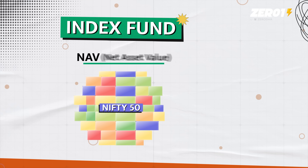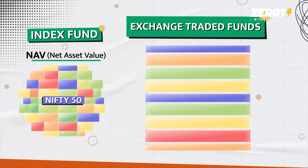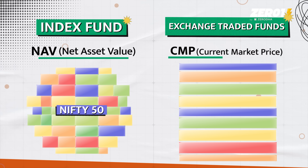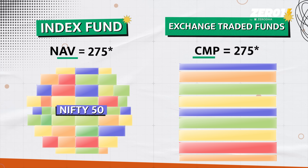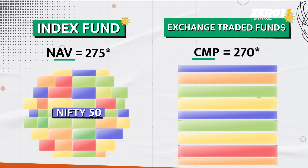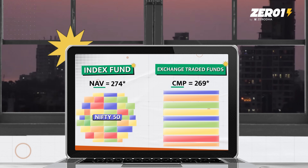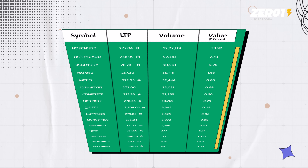Now imagine the same thing but being listed on the stock exchange like a stock. And this fund you can actually trade. So because people are buying and selling, there is no NAV — the price of that ETF is changing in real time as people are buying and selling, exactly like individual stocks.